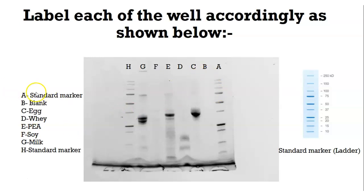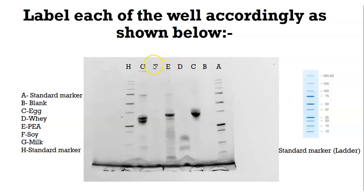So here we've got a key that shows us what exactly is in which well. Well A is your standard marker, and from the manufacturer of those gels they've given us the different molecular weight distributions in kilodaltons for the different bands visible in the standard marker. Well B is blank. Well C has egg protein. Well D has whey protein. Well E has pea protein. Well F has soy. Well G has milk. And finally, Well H is again a standard marker.